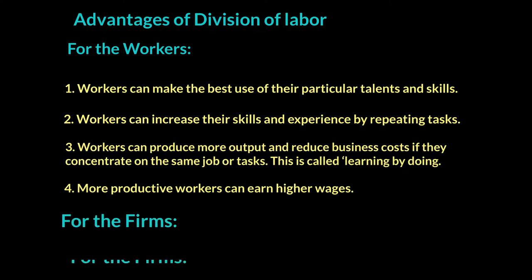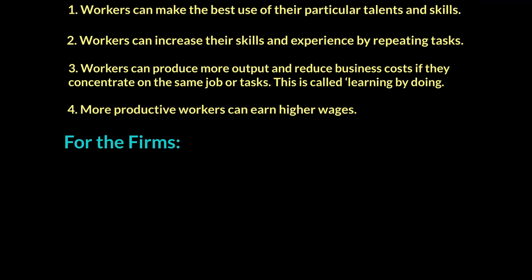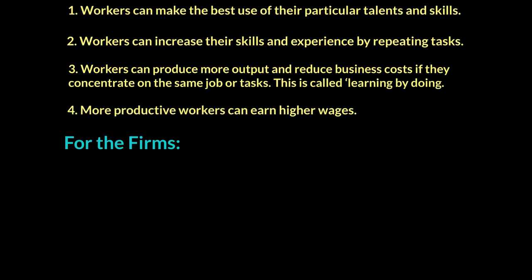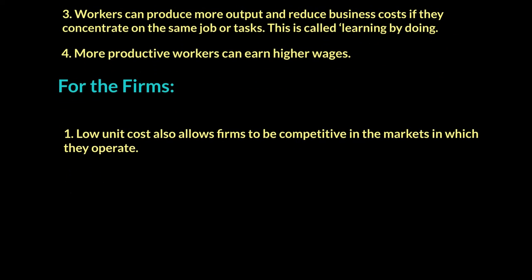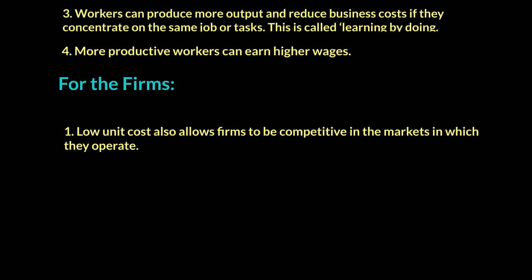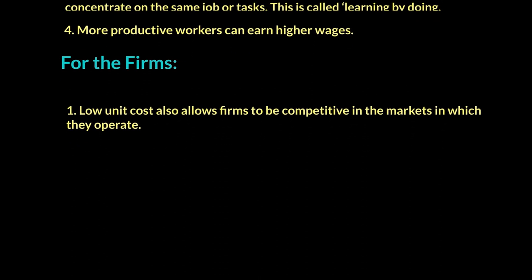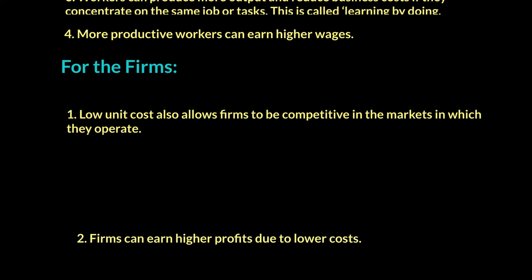From a firm's perspective, the main advantage is a lower unit cost. The same workers are now producing more output, which gives the firm a lower average cost. Because of this lower average cost, firms have higher profits, which means more money available for shareholders, entrepreneurs, and workers.